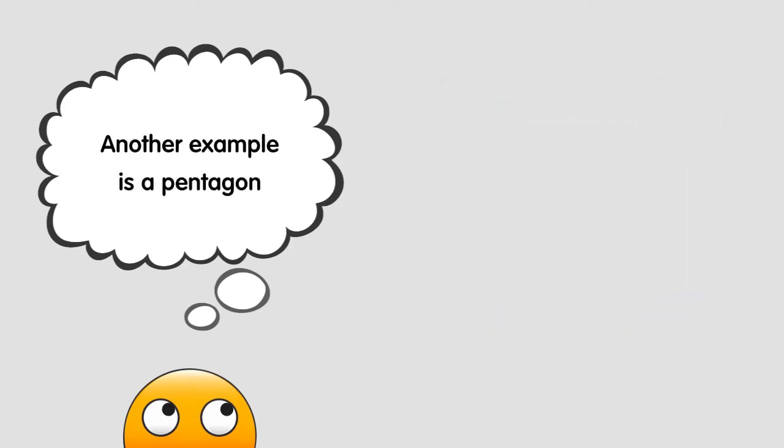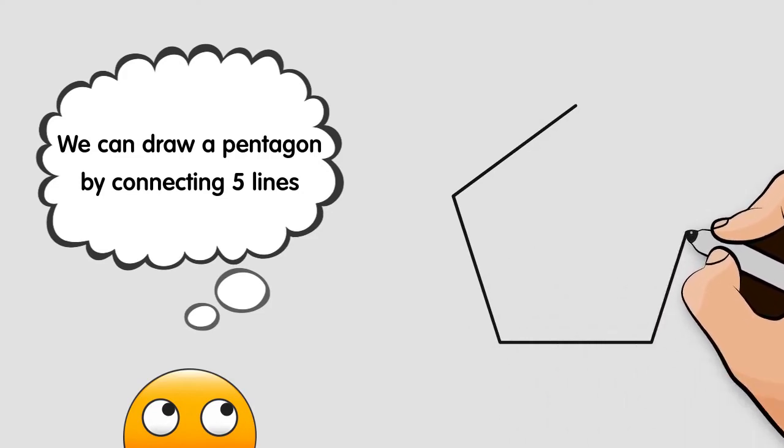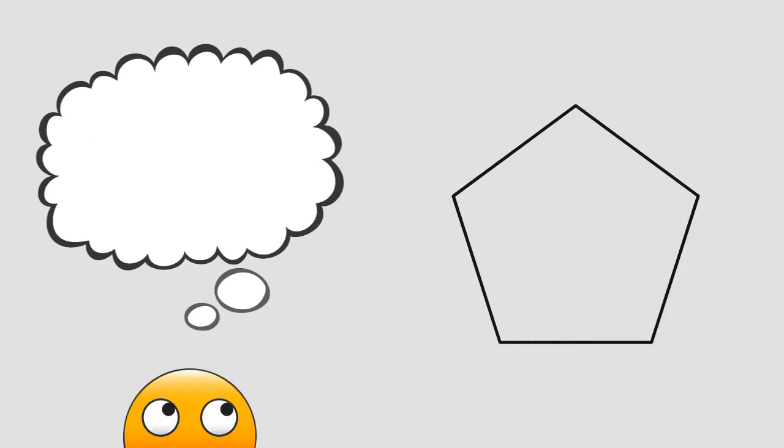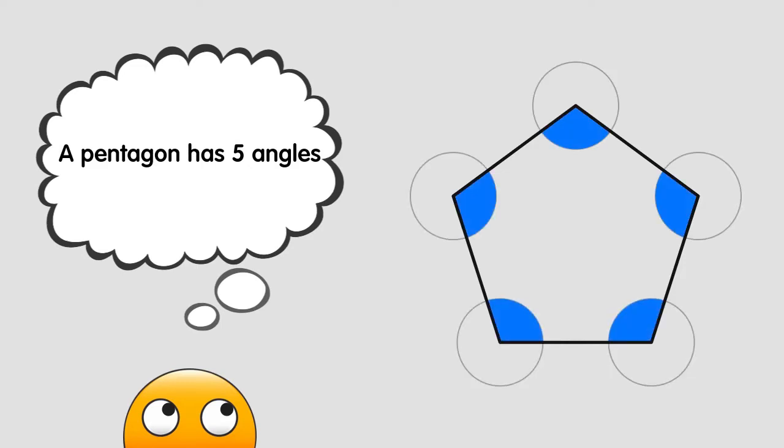Another example is a pentagon. We can draw a pentagon by connecting five lines. A pentagon has five angles. One, two, three, four, and five.